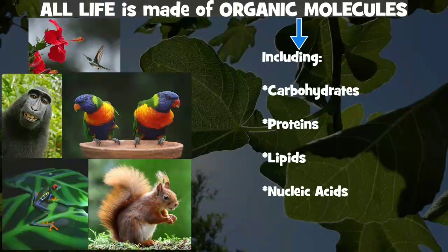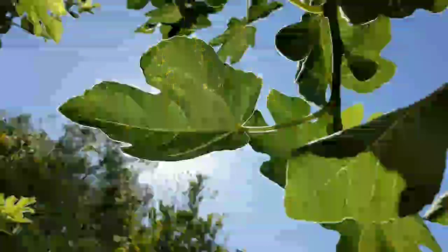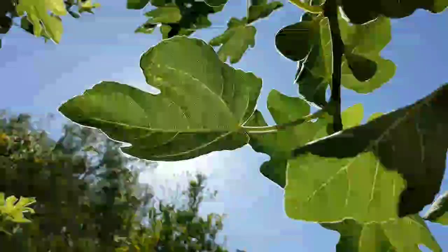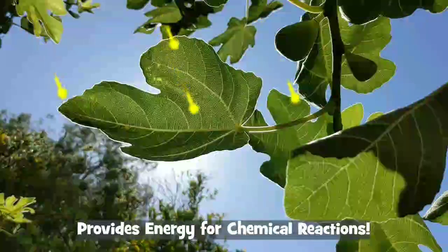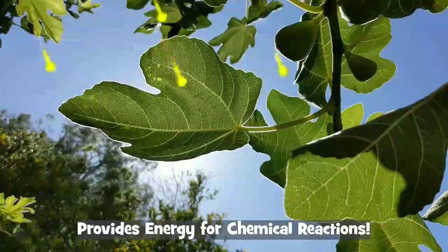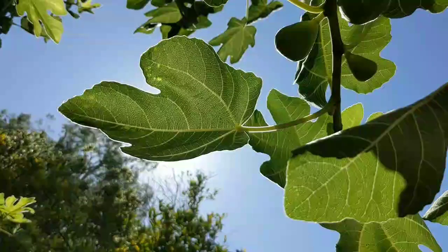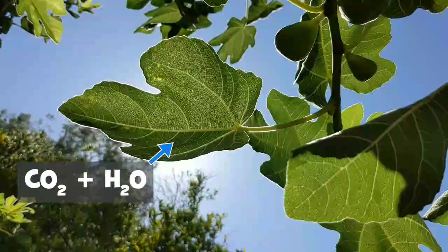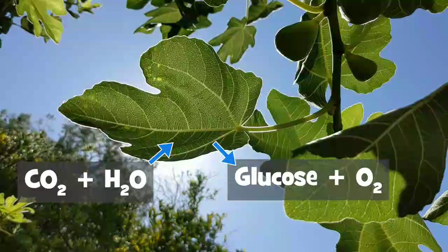So how does this process work? In short, when light strikes a leaf, this light is absorbed and the light energy is used to drive a series of chemical reactions that ultimately make sugars and other organic molecules. Overall, carbon dioxide and water are taken in by the plant, and used to make glucose and oxygen gas.